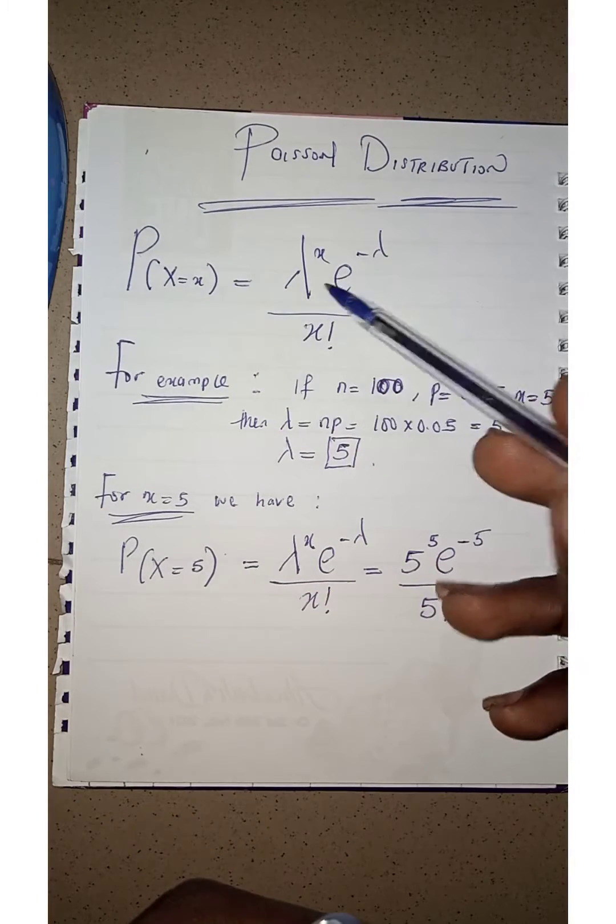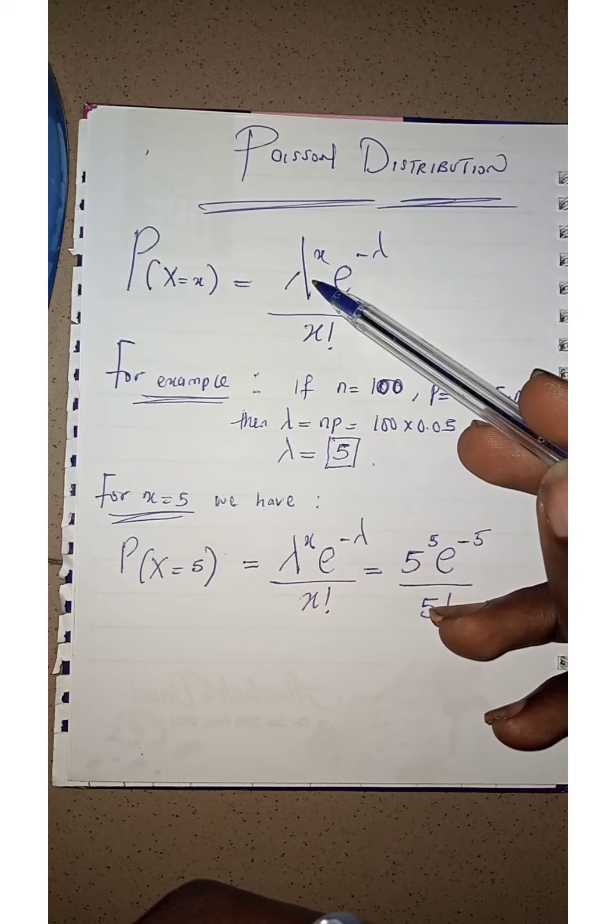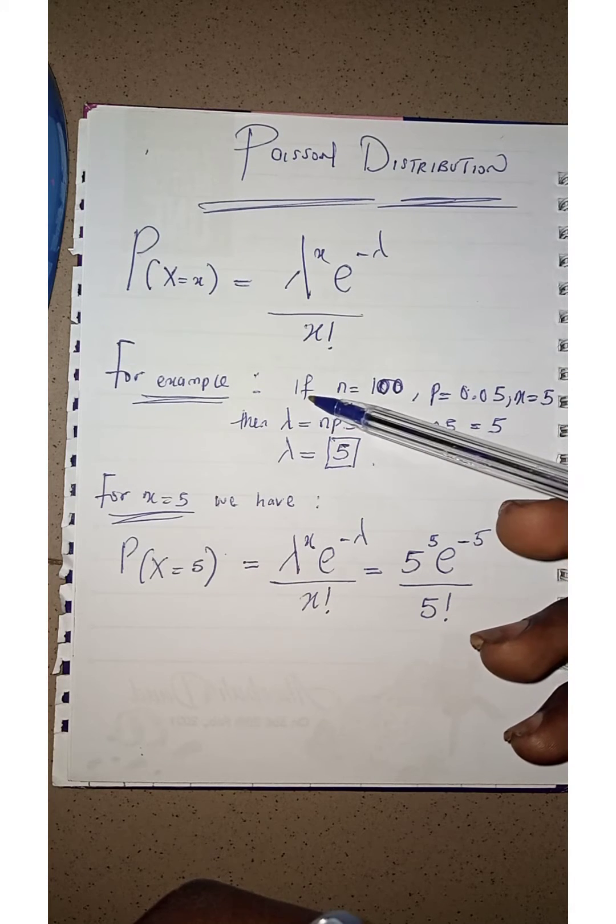We all believe that Poisson distribution is given as lambda raised to the power of x, exponential raised to the power of minus lambda, all over x factorial, where lambda is called the mean, and mean is always given as np.